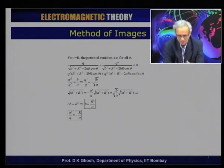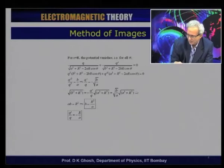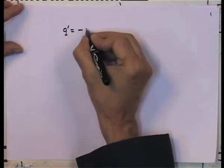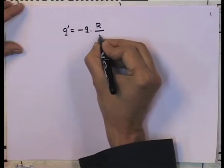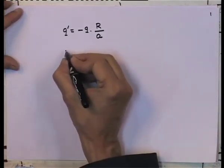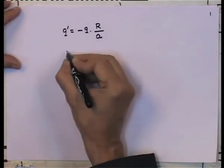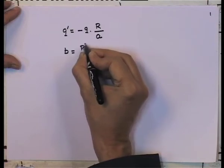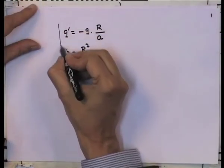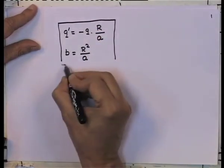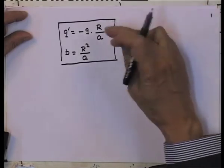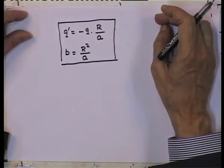Having done that, we could see that the image charge q' must equal minus q times the radius of the sphere divided by a, where a is the object distance, and the image distance b is given by R²/a.